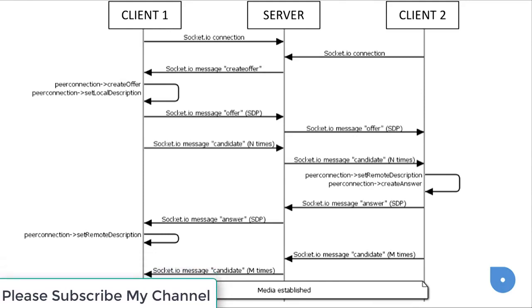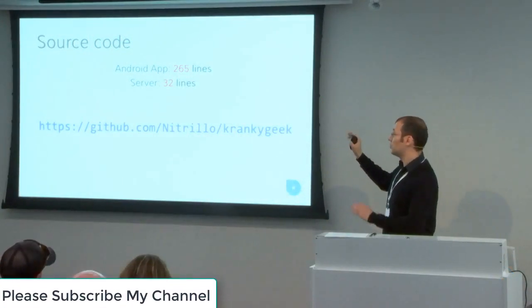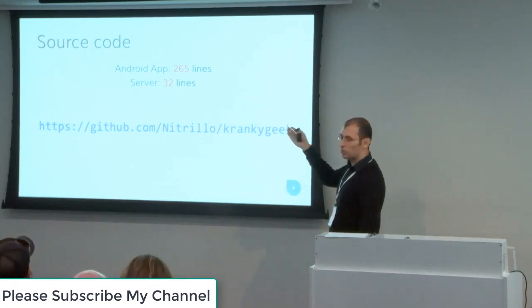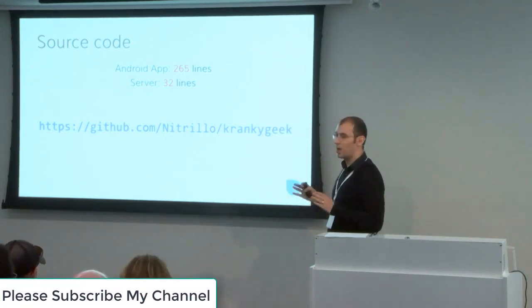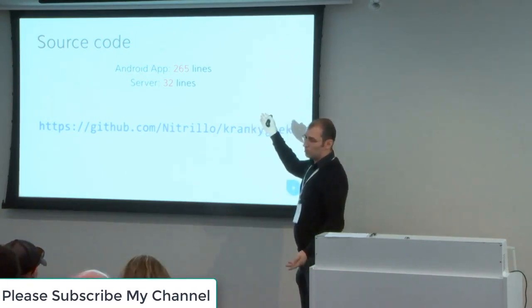At the end of this process, we have media established. Remember also, when you get the stream from the other peer, to add the renderer there to see their video. The server is something Android developers may not be used to, but it's as easy as 30 lines of code for a Socket.IO server — it doesn't have any logic. When there is an offer message it relays it to the other peers, same for the answer and candidates, and for the first connection it sends the create offer to start the process. The application itself is also very small — 260 lines of code for the Android application, which is the minimum needed to have video working.